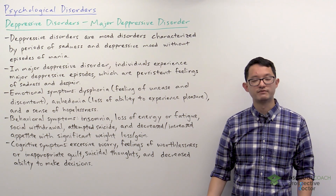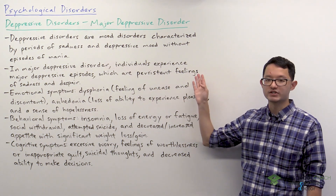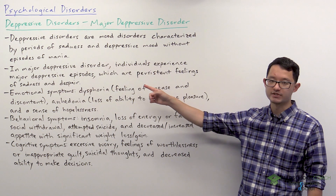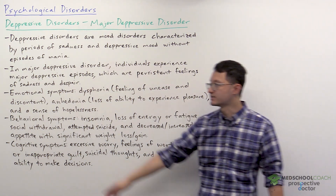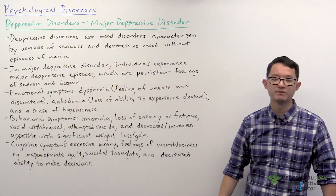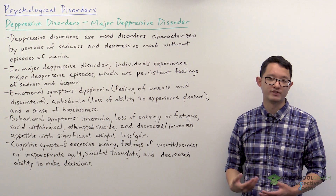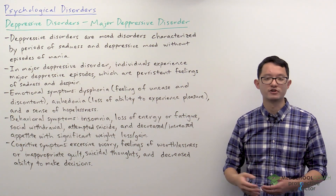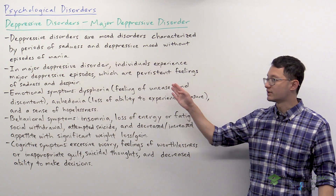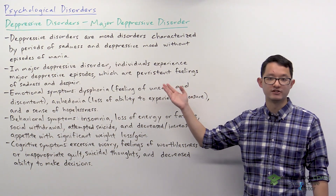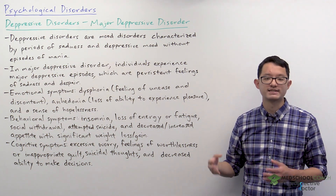There are several types of depressive disorders. In major depressive disorder, individuals experience major depressive episodes, which are persistent feelings of sadness and despair. Because it's described as major, the symptoms are quite severe. This is in contrast to other depressive disorders such as dysthymia, also called persistent depressive disorder, where individuals also experience sadness and despair but over a longer time period and with less severe symptoms.